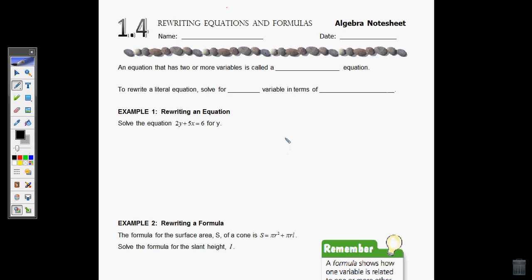Taking a break from my Buffy the Vampire Slayer Marathon to bring you 1.4, Rewriting Equations and Formulas. Alrighty, let's do this. An equation that has two or more variables is called a literal equation. To rewrite a literal equation, you solve for one variable in terms of the others.